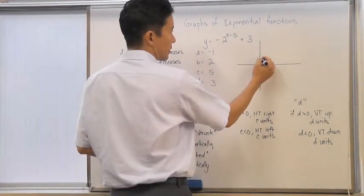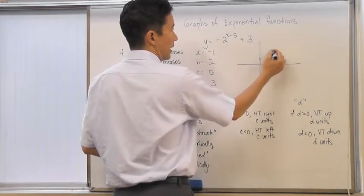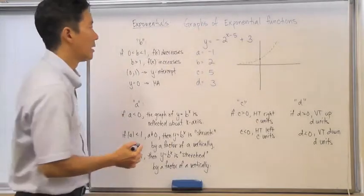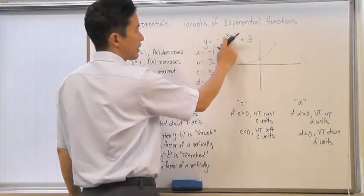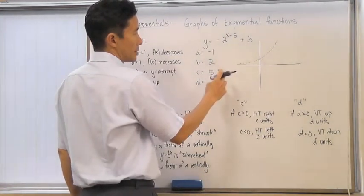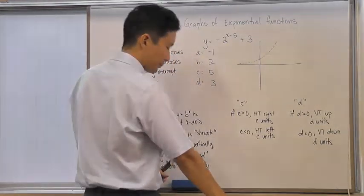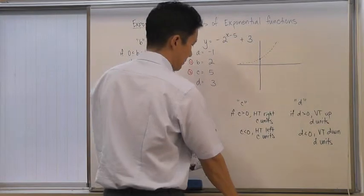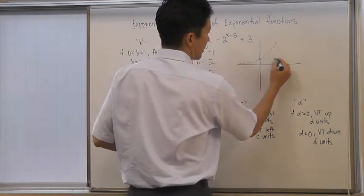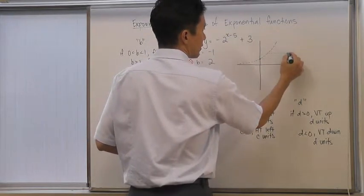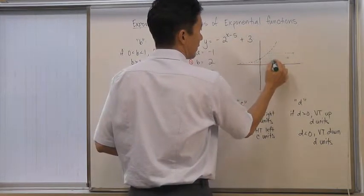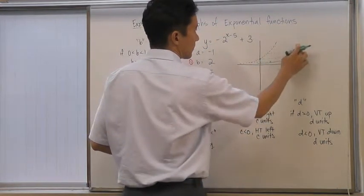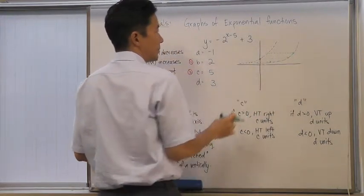To graph this, we start with the simplest form: 2 to the x. We know it passes through the point (0, 1) and increases since b is greater than 1. Next, we apply the c transformation and shift the graph 5 units to the right. So every point moves 5 units to the right, giving us a horizontally shifted version of the curve.